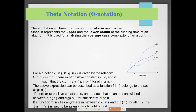For a function g(n), theta g(n) is given by the relation: there exist positive constants c1 and c2, and n-naught (the number of executions), such that c1·g(n) ≤ f(n) ≤ c2·g(n) for all n greater than or equal to n-naught. This means the function execution will be between a lower bound and upper bound — that is the average case.